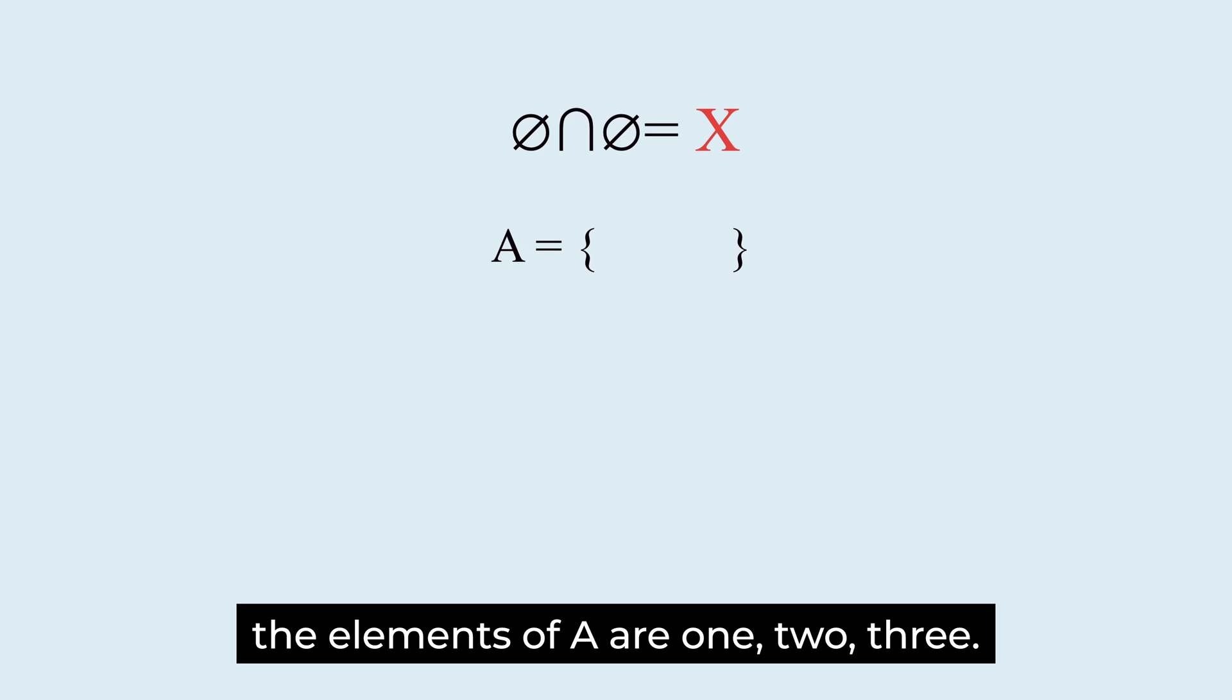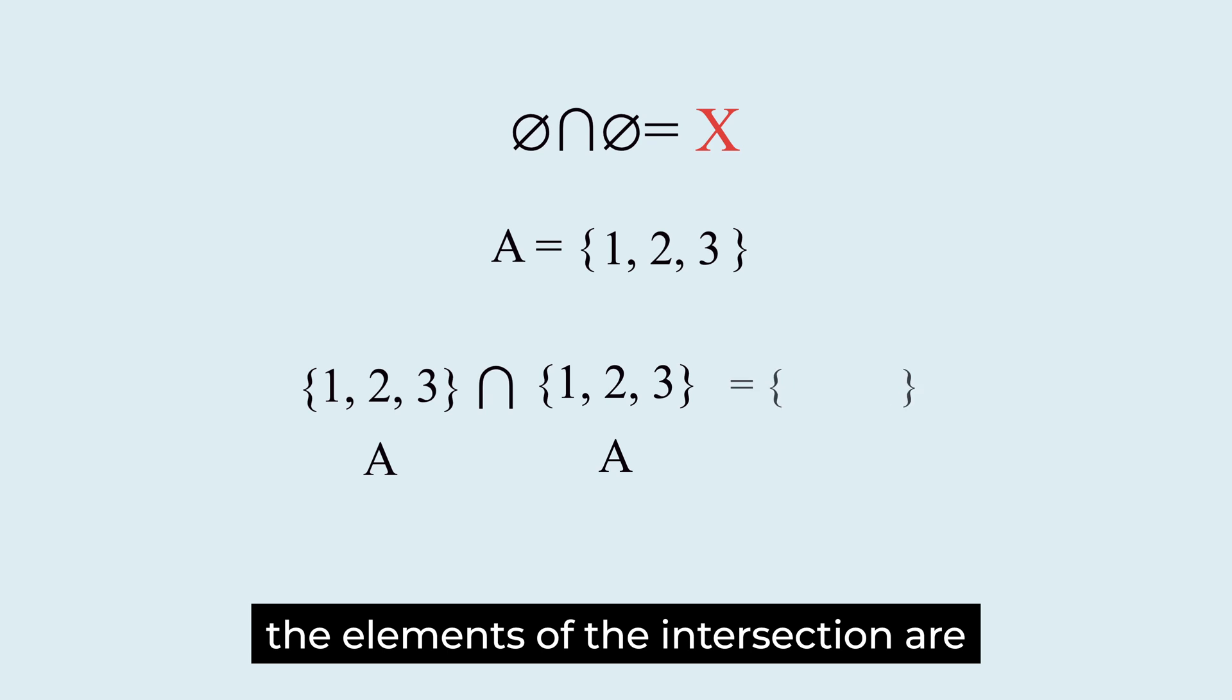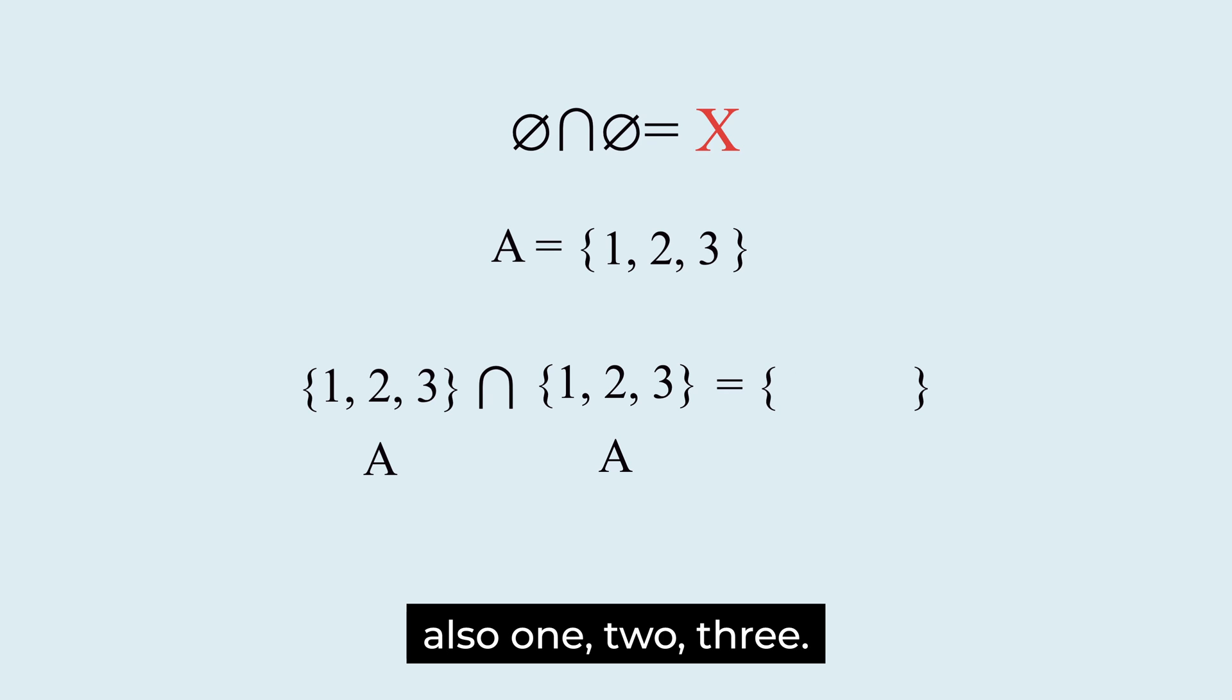The second way is to apply the operation rule for intersection. The elements of A are 1, 2, 3. What is the intersection of A and A? The elements of the intersection are also 1, 2, 3. It is set A.